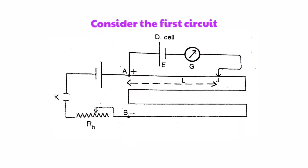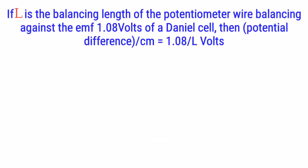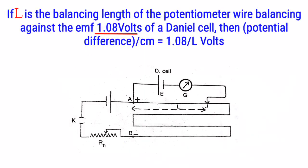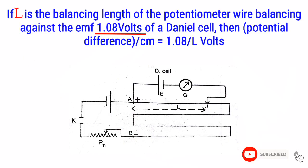Consider the first circuit. If L is the balancing length of the potentiometer wire balancing against the EMF 1.08 volts of a Daniel cell, then potential difference per centimeter equals 1.08 per L volts.